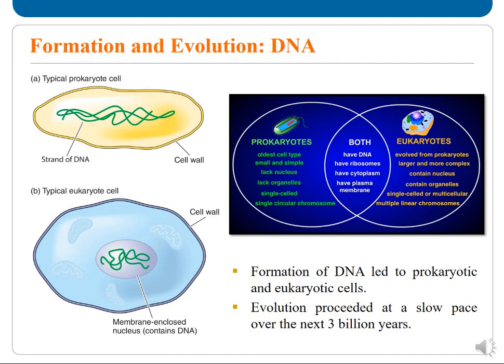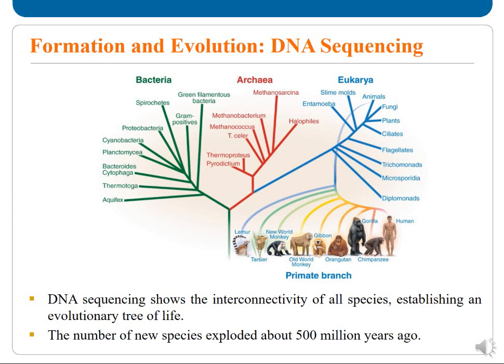Evolution proceeded at a very slow pace over the next 3 billion years. DNA sequencing shows the interconnectivity of all species, establishing an evolutionary tree of life.